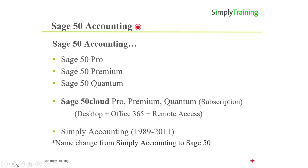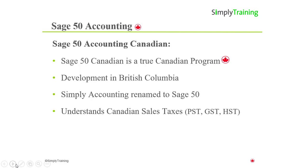Since then, Sage 50 has evolved immensely with continually adding automated features to help streamline businesses, bookkeeping processes and to save time. Sage 50 is truly a Canadian product. The accounting program started in 1985 in British Columbia, Canada and is still developed there today. Its name has changed over the years from Bedford to Simply Accounting to Sage 50. Being a Canadian accounting program, it understands Canadian sales tax requirements and the proper tracking of GST and HST input tax credits.